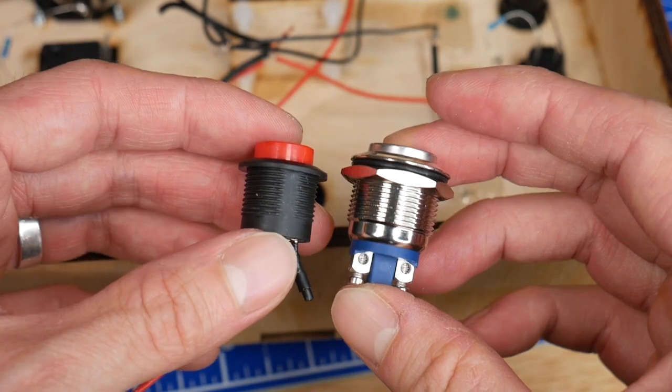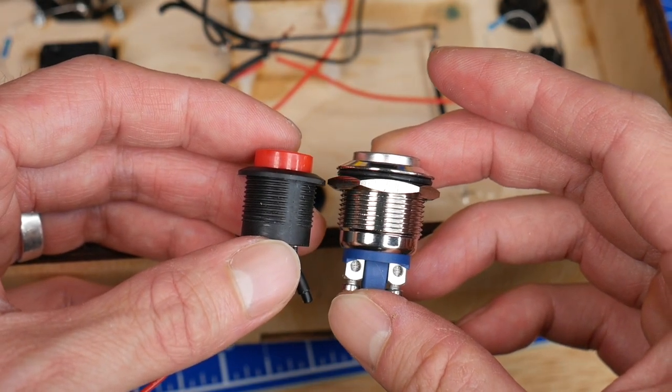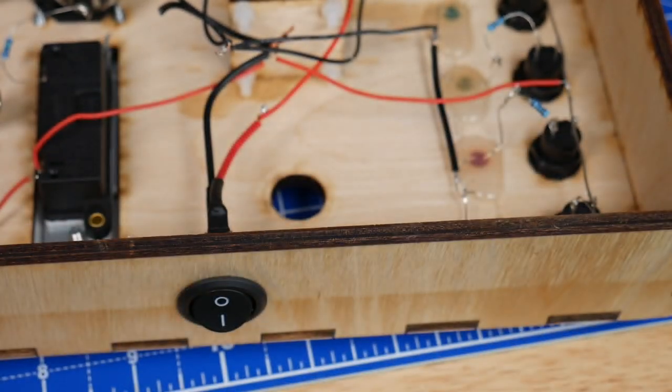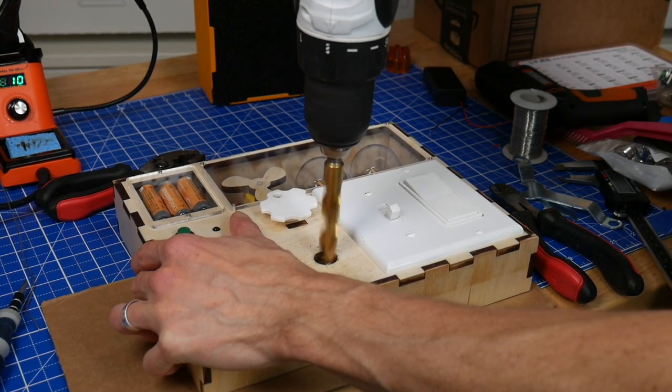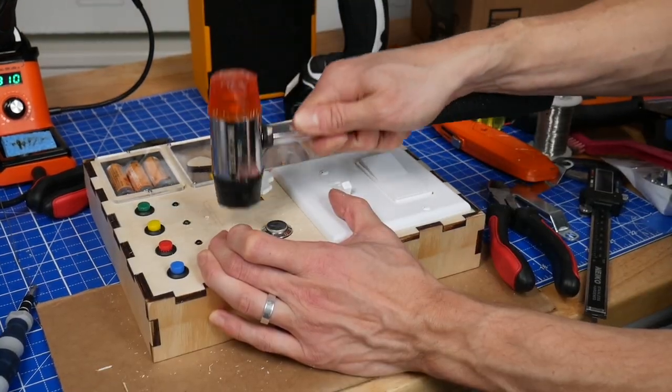However one problem is that it's slightly wider than the old button, so this means I need to enlarge the cutout. I tried various methods to do this as cleanly as possible, but it was still pretty rough around the edges. But in the end I got it in there.